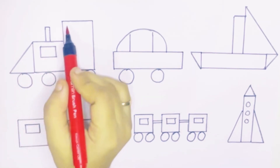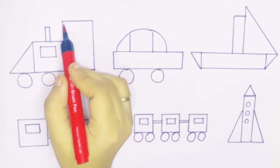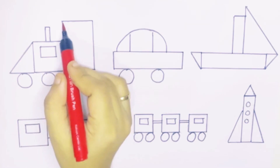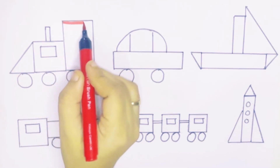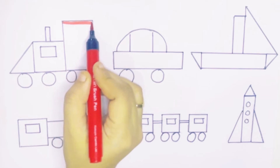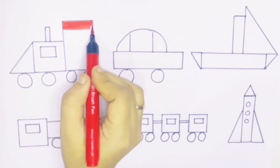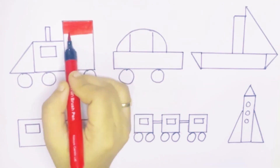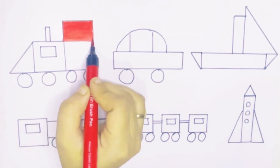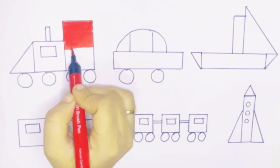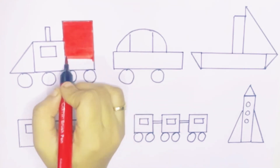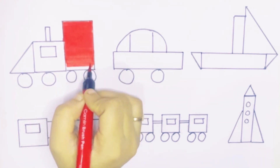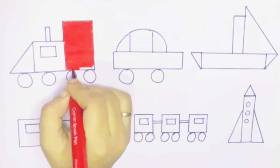We have drawn a train engine, a car, a board, a truck, a train, and a rocket. We are going to color them now, and we are going to draw a room.